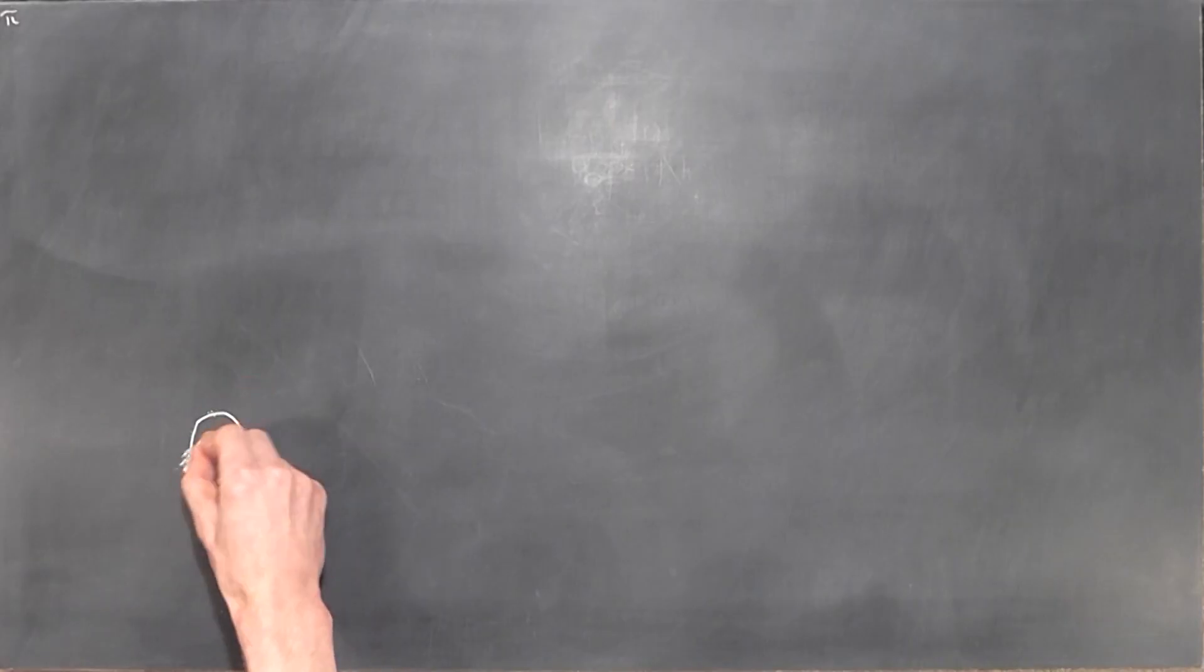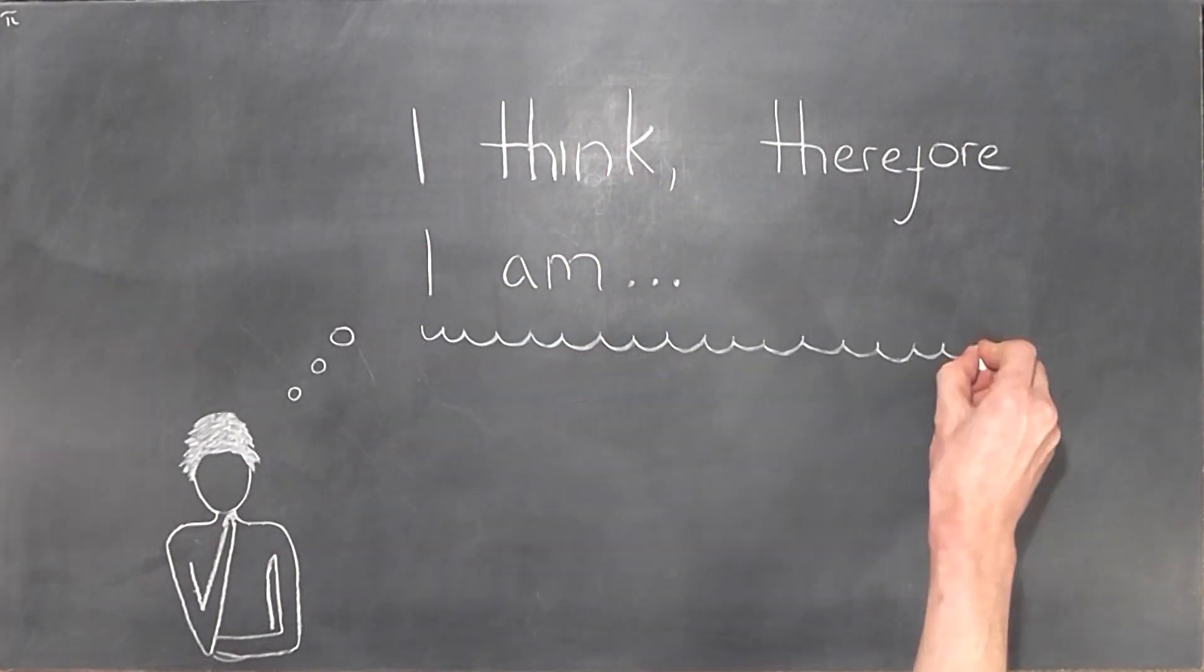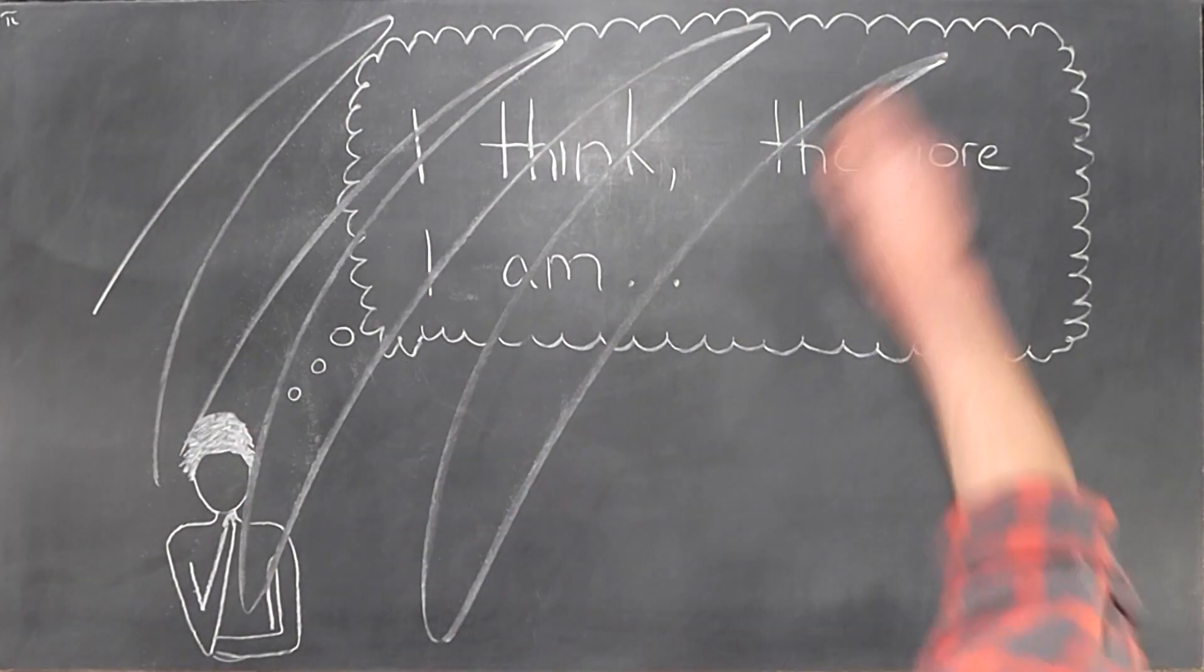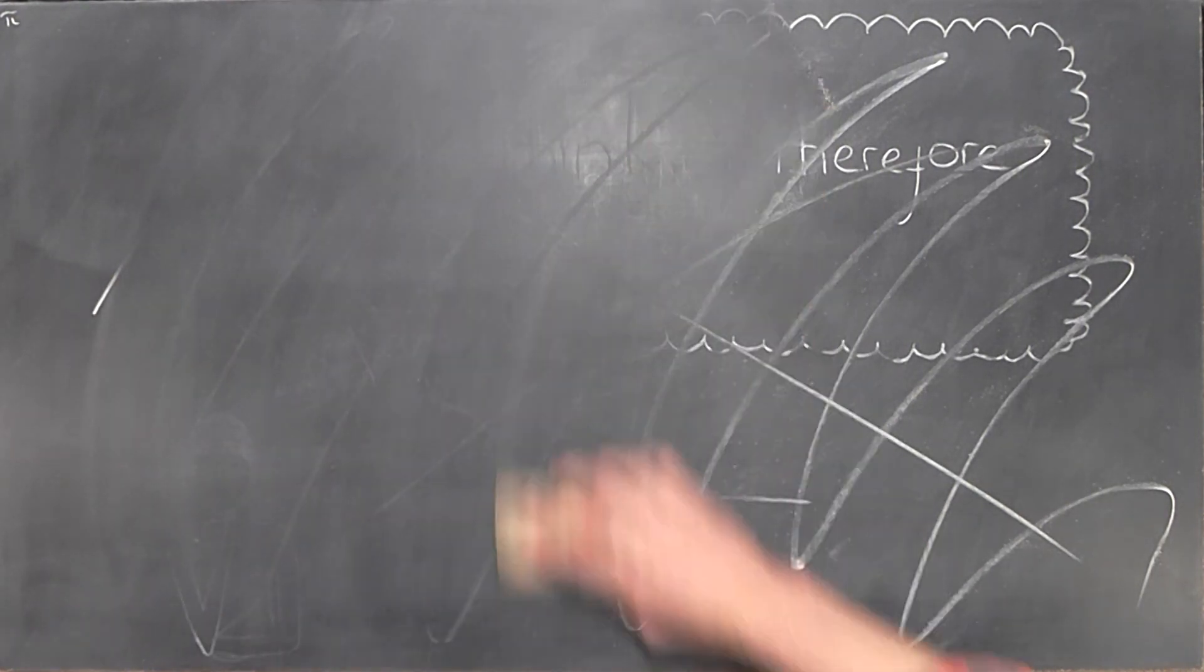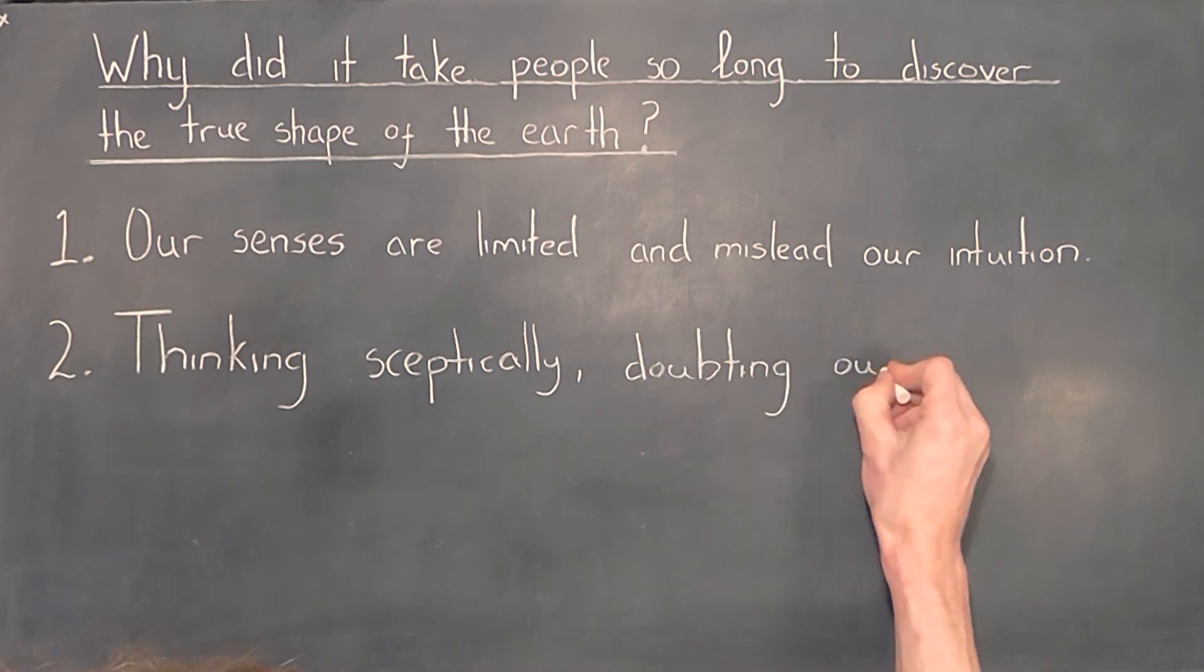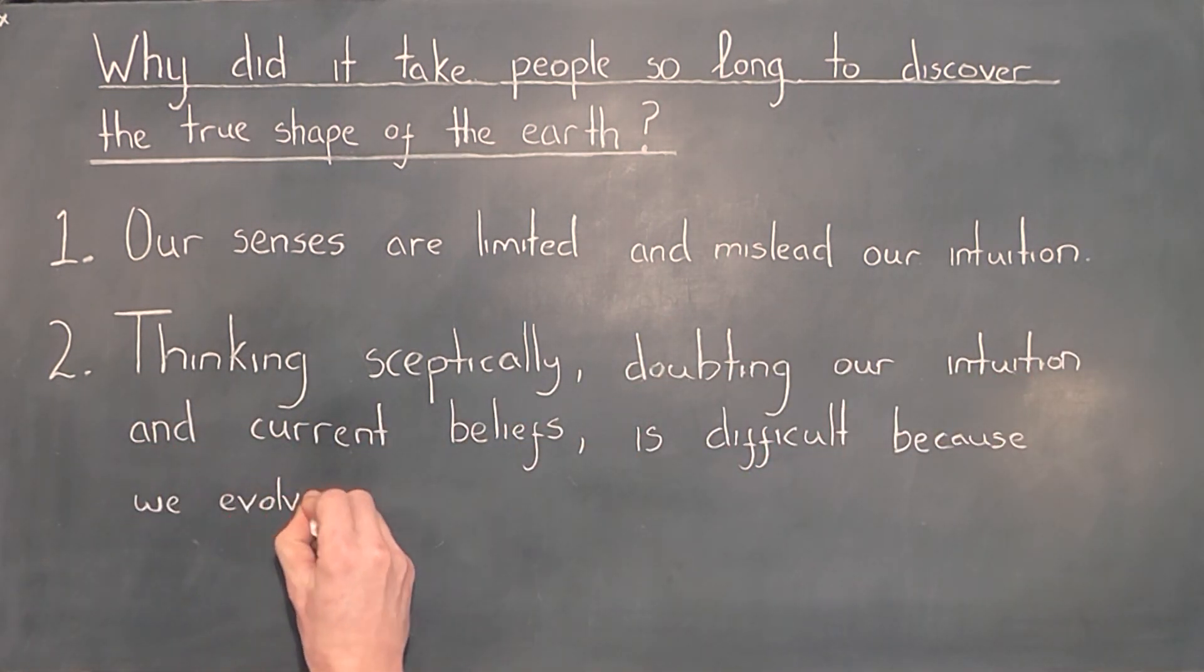By contrast, how often do you think a caveman would need to assess the validity of a logical argument, or conduct an experiment? Probably not very often. Evolution thus favored people who default to trusting their instincts and intuition over applying skepticism and logical thought, and we can therefore say that discovering the true shape of the earth was difficult not only because our senses are limited and mislead our intuition, but also because thinking skeptically, doubting our intuition and current beliefs is difficult because we literally evolved not to do it. Most of the time.